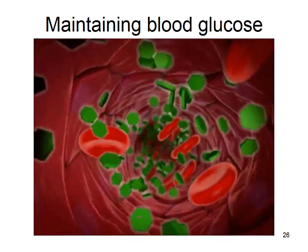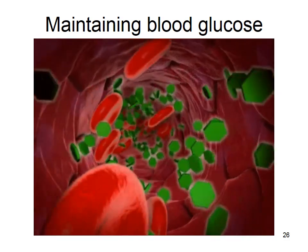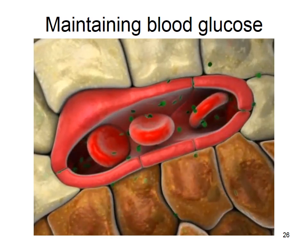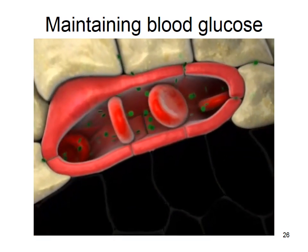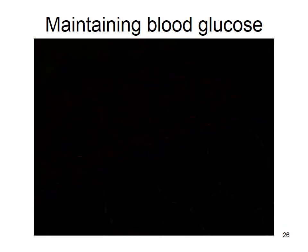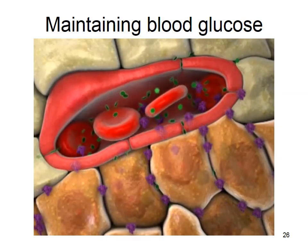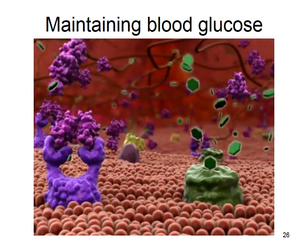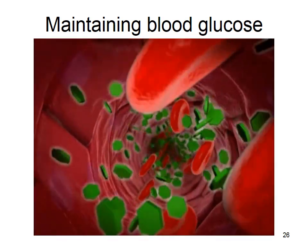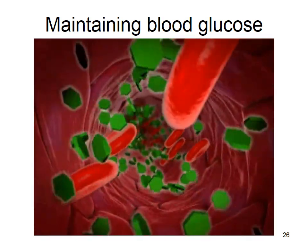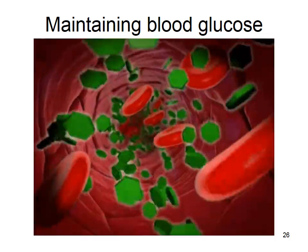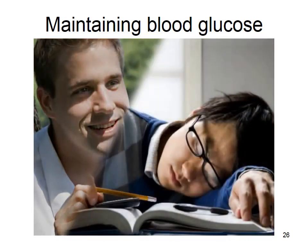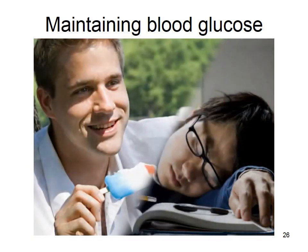In diabetes, the body is unable to maintain homeostasis of blood glucose levels. In type 1 diabetes, the beta cells of the pancreas are destroyed by the immune system, so no insulin is produced. In type 2 diabetes, the pancreas produces insulin but target cells do not take up glucose. In both types, when blood glucose levels rise, cells do not take up the additional glucose, and blood glucose remains high.